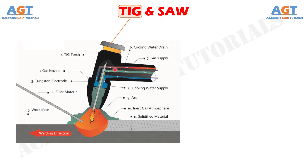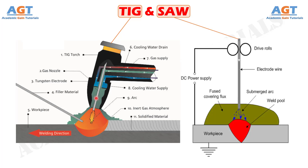Tungsten inert gas welding, formerly known as gas tungsten arc welding, is one arc welding process where an electric arc is established between a non-consumable electrode and the base metals. The TIG welding electrode is made of tungsten, usually with one or more alloying elements like lanthanum, thorium, cerium, zirconium, etc. Submerged arc welding is a fusion welding process based on a consumable electrode, employing a wire electrode that is continuously fed from a spool.